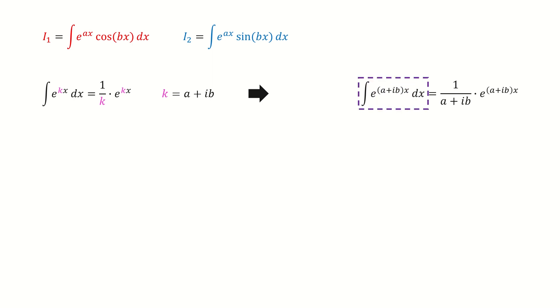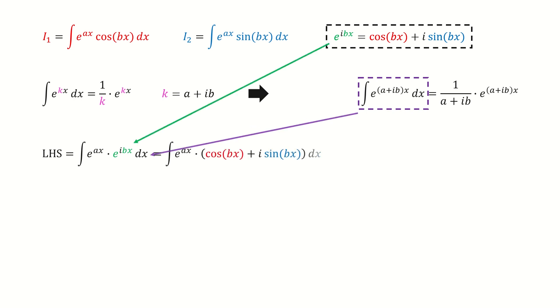First, let's deal with the left-hand side. We write the left-hand side into this form, then we use Euler's formula. After we replace this green term, we got here.